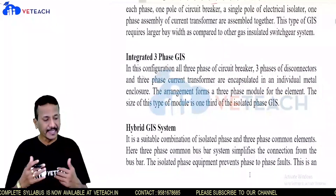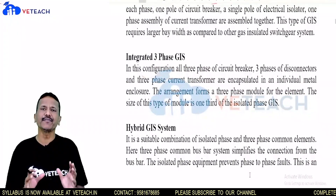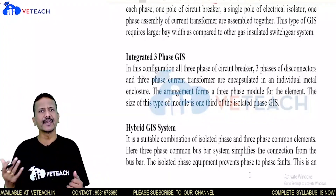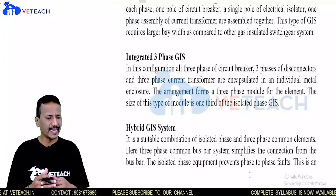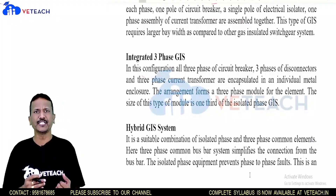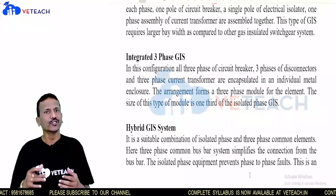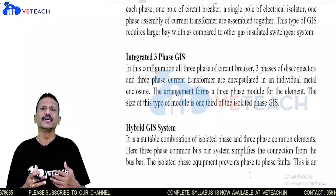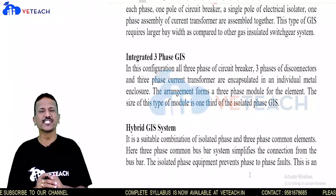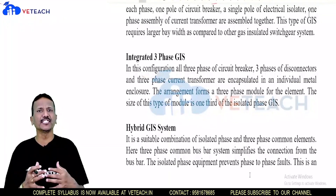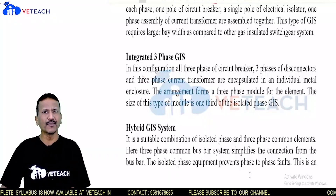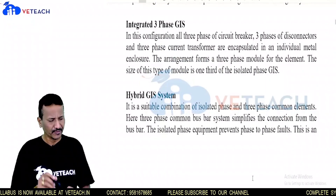The second type is integrated three-phase GIS. Since we have a three-phase system, three breakers, three phases, and three isolators for incoming and outgoing are used together. The third type is hybrid GIS, which is a combination of isolated phase and integrated three-phase GIS.